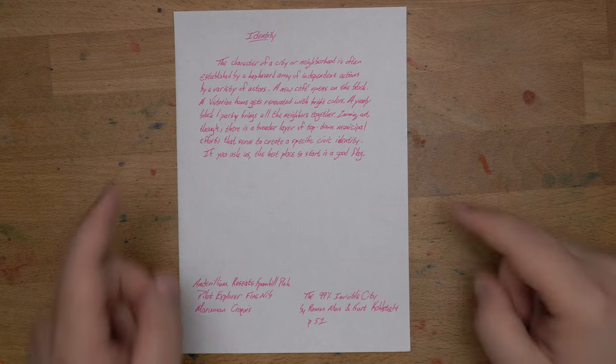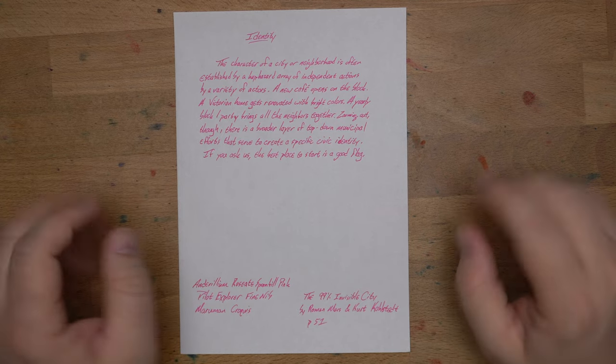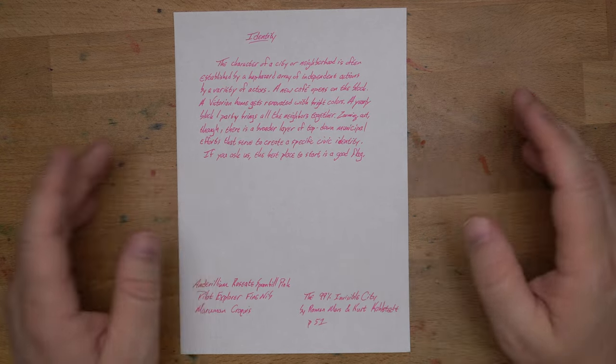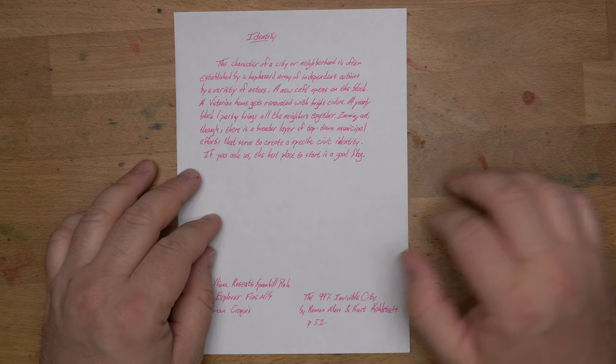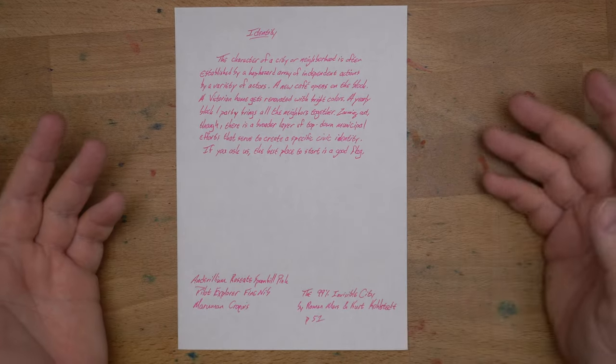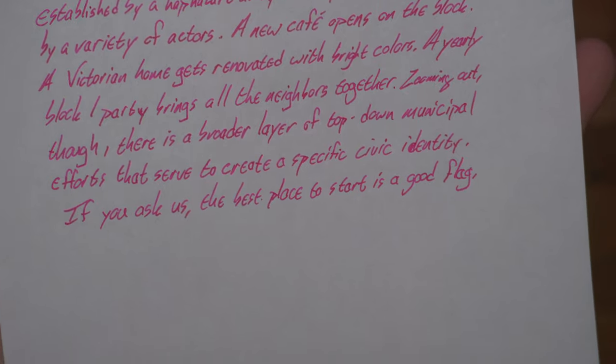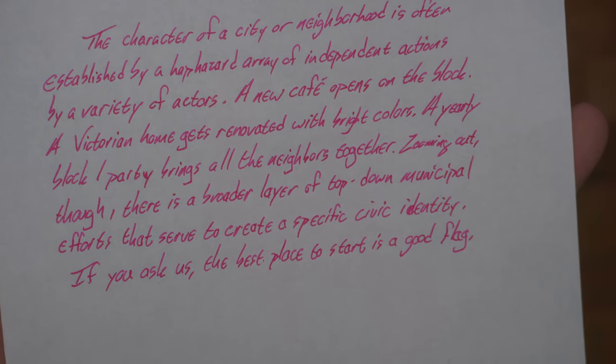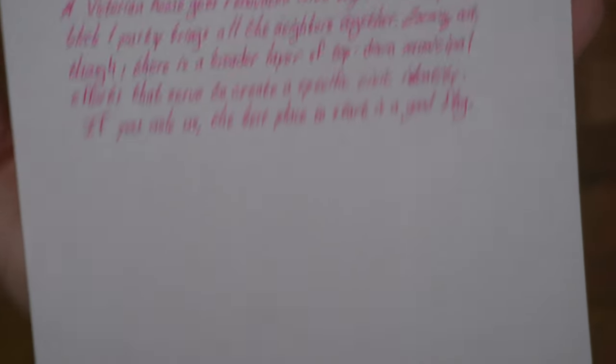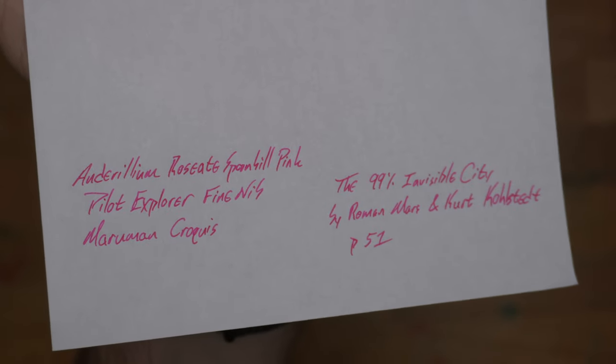Next up, I put it on some of this Mnemosyne paper that I'm such a big fan of. Nice bright white, nice and smooth, a little bit of a texture to it, but not much. And it works really well with fountain pen ink. And this ink really kind of pops on this paper. It looks great. No real shading, no sheen or anything like that. It's just a nice, bright, extremely readable pink. Looks great, if you ask me.